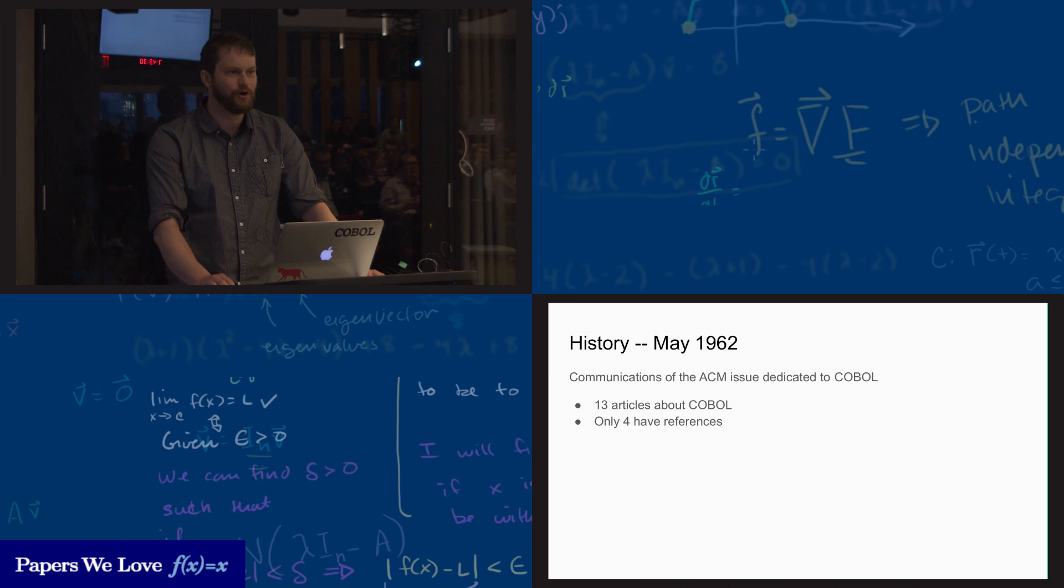May 1962, communications of the ACM puts out the COBOL issue. Thirteen articles about COBOL. Only four of those articles have references to previous works. This is kind of COBOL's coming out ball, and it comes out and basically kind of flips off to academia.